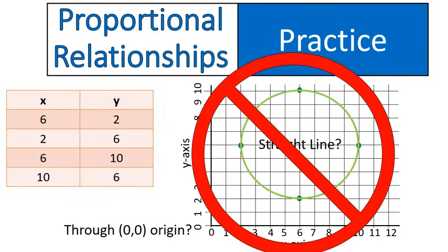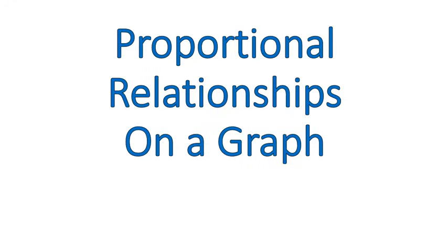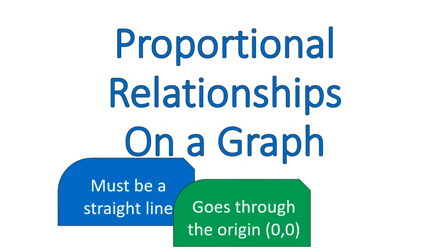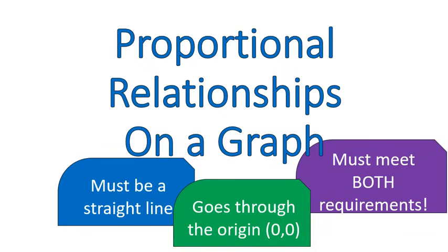So that's a helpful tool. It also lets us see visually what a proportional relationship looks like. So, a couple of just reminders at the end. Proportional relationships on a graph must be a straight line. It must go through the origin. Both requirements must be met. It can't be just one or the other. And that is proportional relationships on a graph. I hope that lesson was helpful for you. Have a wonderful day.